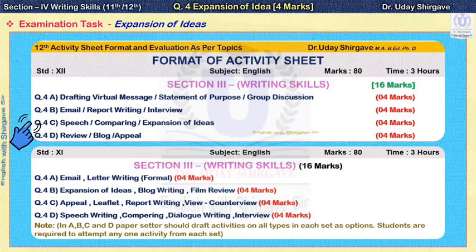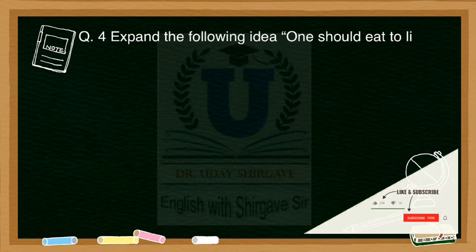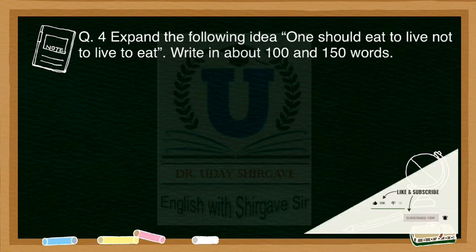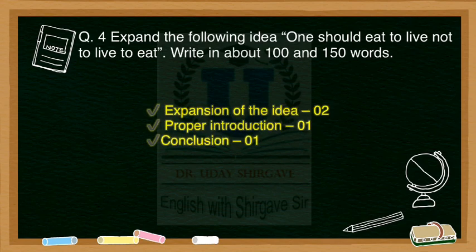Let us start with the first example. Question number 4: Expand the following idea — 'One should eat to live, not live to eat.' Write in about 100 to 150 words. This idea means that a person should eat food only to survive, not make eating the sole purpose of life. For the marking scheme, the expansion of idea carries four marks, with one mark each for a proper introduction and conclusion.